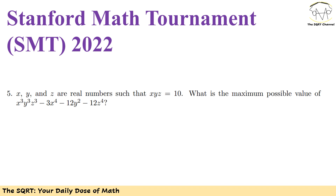In problem 5, we have x, y, and z as real numbers. We also have x, y, z equals to 10. We are going to find the maximum possible value of the expression: x cubed y cubed z cubed minus 3x to the power of 4 minus 12y to the power of 2 minus 12z to the power of 4.